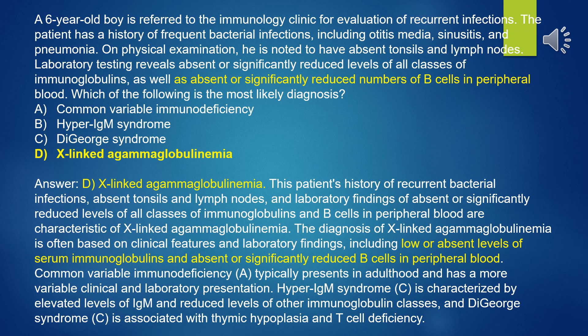The diagnosis is based on clinical features and laboratory findings including low or absent serum immunoglobulins and absent or reduced B-cells. Common variable immunodeficiency typically presents in adulthood with a more variable presentation. Hyper-IgM syndrome is characterized by elevated IgM with reduced other immunoglobulin classes, and DiGeorge syndrome is associated with thymic hypoplasia and T-cell deficiency.